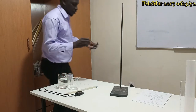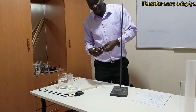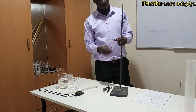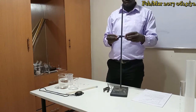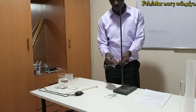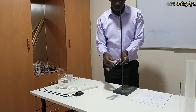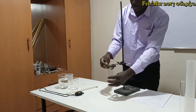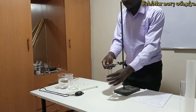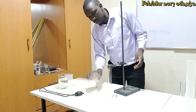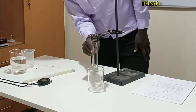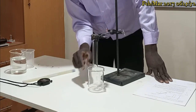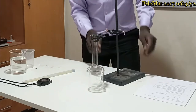We have the stand here, which we need. Sometimes in the experiment, someone tends to have a problem with a complete stand. This is my complete stand — the boss, the clamp, and the stand. So we just need to fix that. We have the boiling tube here; the boiling tube is supposed to be clamped. Before we pour in hot water, remember we want to pour water here — so when you pour the water in the boiling tube, it should be immersed in the surrounding water.